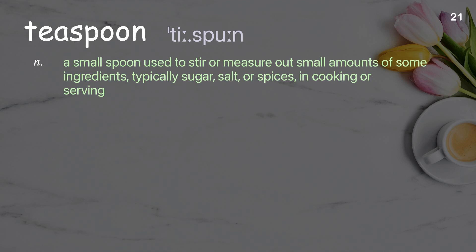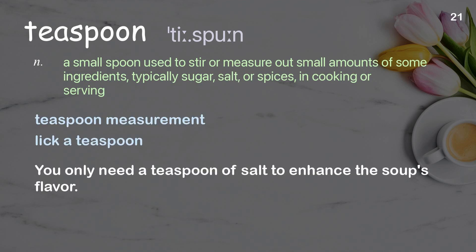Teaspoon. A small spoon used to stir or measure out small amounts of some ingredients, typically sugar, salt, or spices, in cooking or serving. Examples: teaspoon measurement, lick a teaspoon. You only need a teaspoon of salt to enhance the soup's flavor.